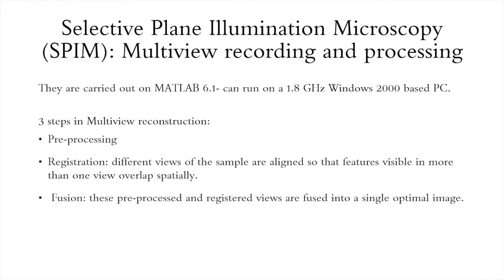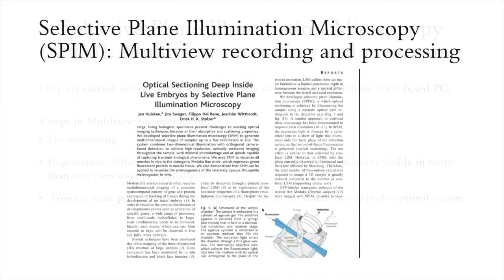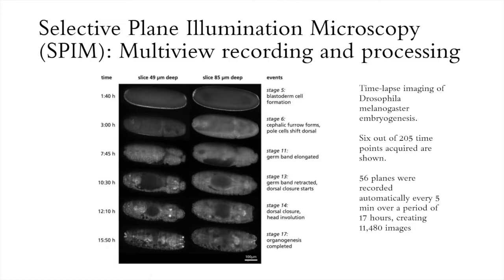Depending on the optical properties of the sample, multi-view reconstruction can help to fill in information about obscured regions and improve resolution. For example, in this Huisken paper, where they were doing a live image of an opaque sample — a Drosophila embryo in the heart of a live medaka — additional views provided information about regions not visible in a single view. Multi-view reconstruction was not necessary here despite the optically dense structure of the Drosophila embryo, as the optical sectioning capability and good lateral resolution of SPIM were enough to produce an image.